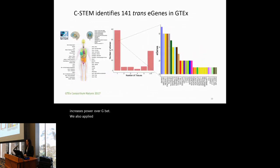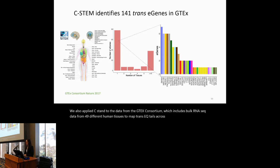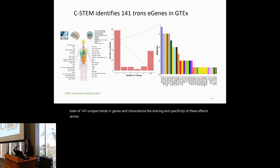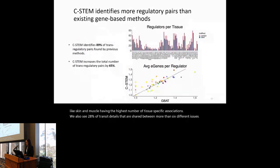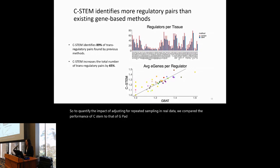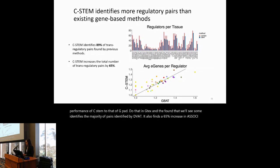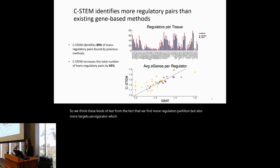We applied CSTEM to GTEx data, comprising bulk RNA-seq from 49 human tissues, identifying 141 unique trans-e-genes and characterizing their sharing and specificity across tissues. Most trans-EQTLs are specific to a single tissue, with skin and muscle having the highest tissue-specific associations, while 28% are shared across more than six tissues. Compared to GBAT, CSTEM identifies the majority of GBAT's pairs but also finds a 65% increase in associations — both more regulators per tissue and more targets per regulator — providing a better picture of trans-regulatory networks.